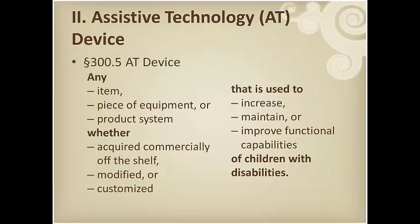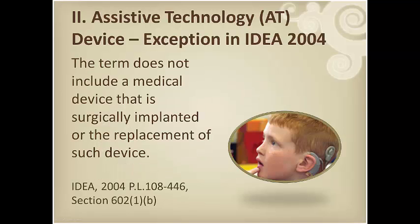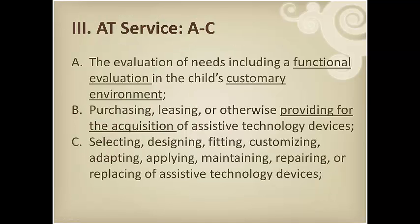It can be shelf liner that is repurposed to keep items in place on a tray or workspace. It's also the walker or wheelchair a person uses to get around. It does not, however, include medical devices that are surgically implanted or the replacement of such devices. AT is also a service that directly assists children with a disability in the selection, acquisition, or use of an AT device.